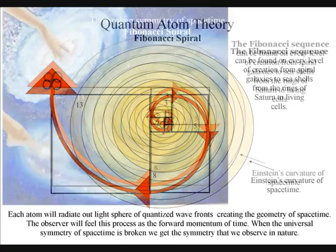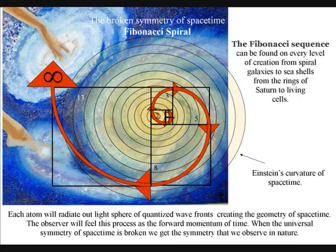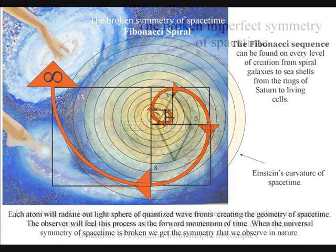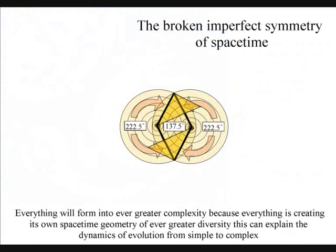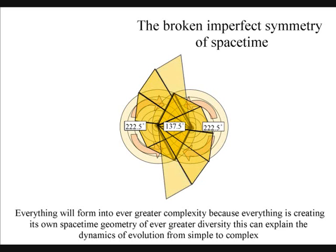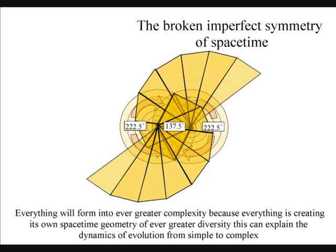This can be seen in spiral galaxies. The galaxy's atoms at the center of the galaxy have turned the light back in on itself under its own gravitational force, forming the imperfections of its own broken symmetry, of its own spiral space-time geometry.